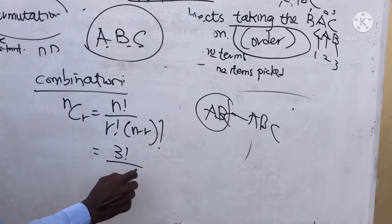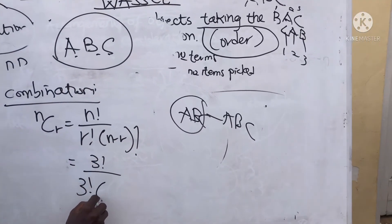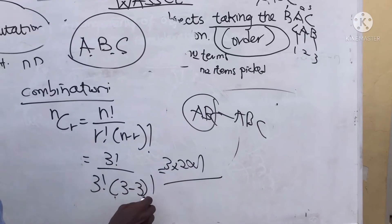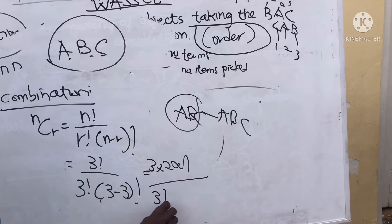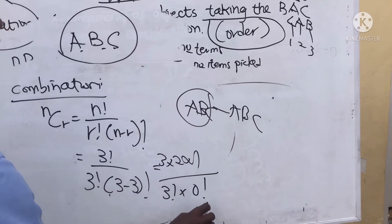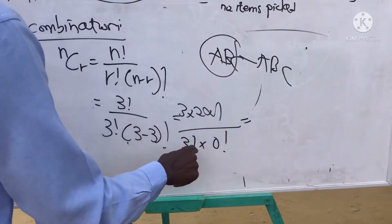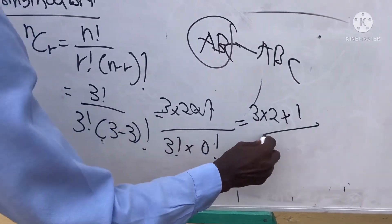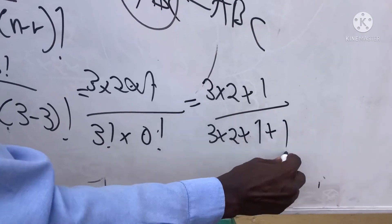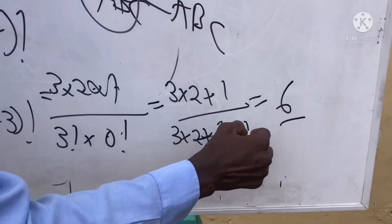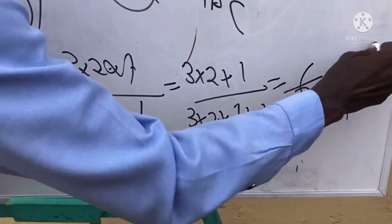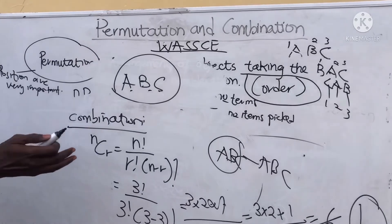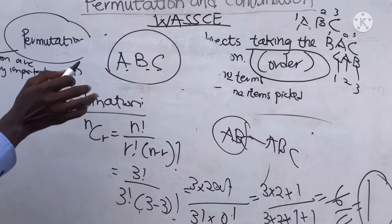The number of terms is three and we are picking three at a time, so r is three. Using the combination formula: 3C3 = 3 factorial over (3 factorial times (3 minus 3) factorial). Three factorial is 3 times 2 times 1, and zero factorial is one. So we get (3 times 2 times 1) over (3 times 2 times 1 times 1), which equals 6 over 6, equals one. The number of ways to arrange A, B, C in combination without considering position is just one.